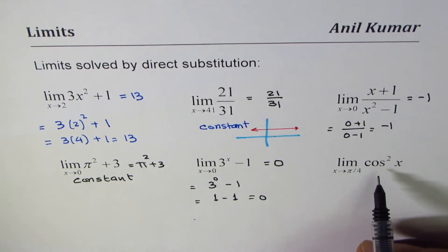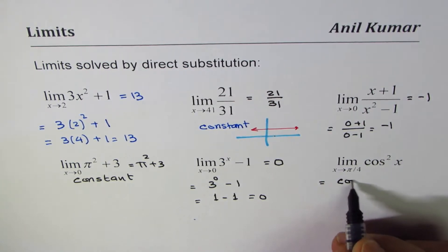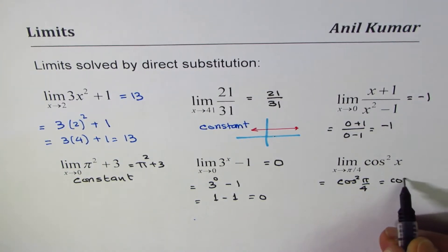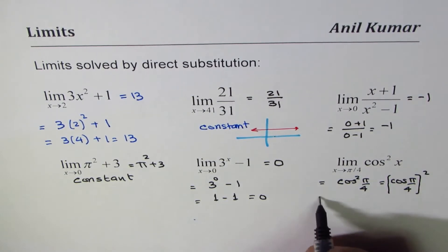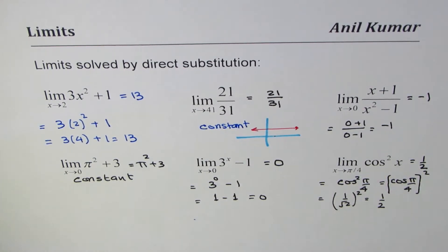Here we have a trigonometric function, limit cos²x when x approaches π/4. So let's substitute π/4. What we get here is cos²(π/4). You could also write this as (cos π/4)². It's one and the same thing. Cos π/4 is 1/√2, and when you square this what you get is 1/2. So the answer here is 1/2. Like this you can find the limit of some functions which are actually continuous at that point where we are interested in finding limit by direct substitution.